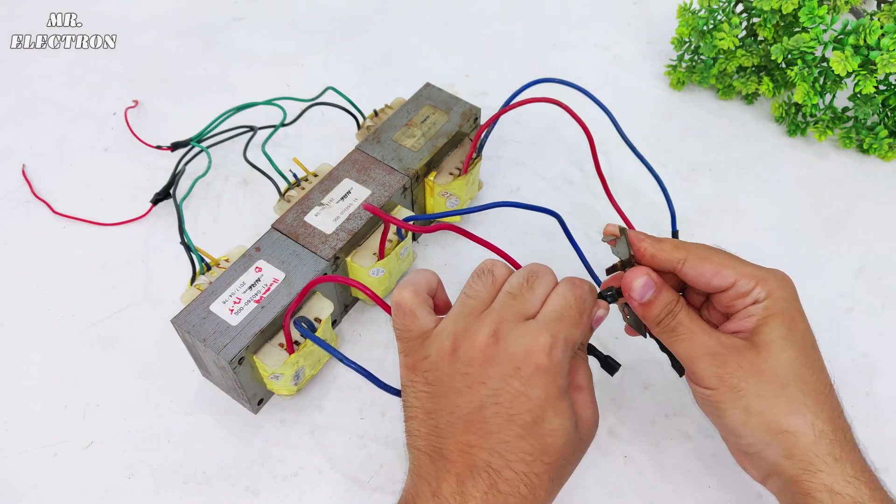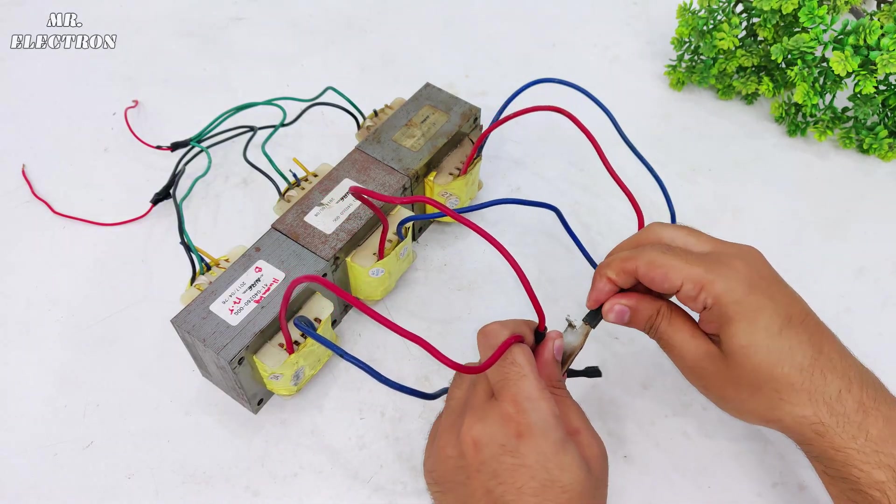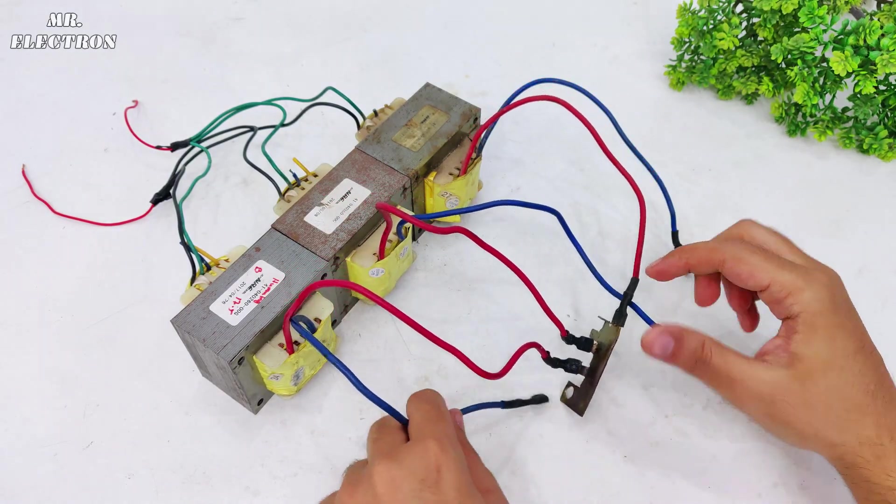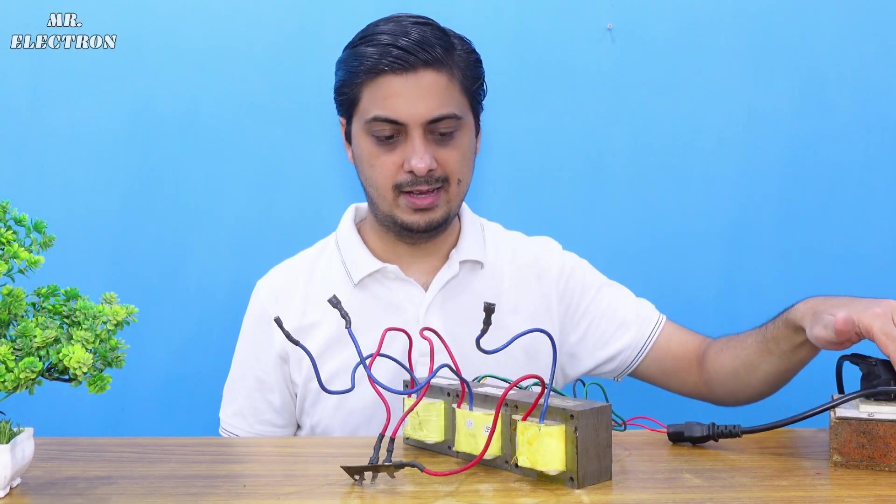For the three-phase star connection, I'm choosing the red wire to create the neutral point. Finally, we have the blue ones as the three-phase output wires. Turning it on.